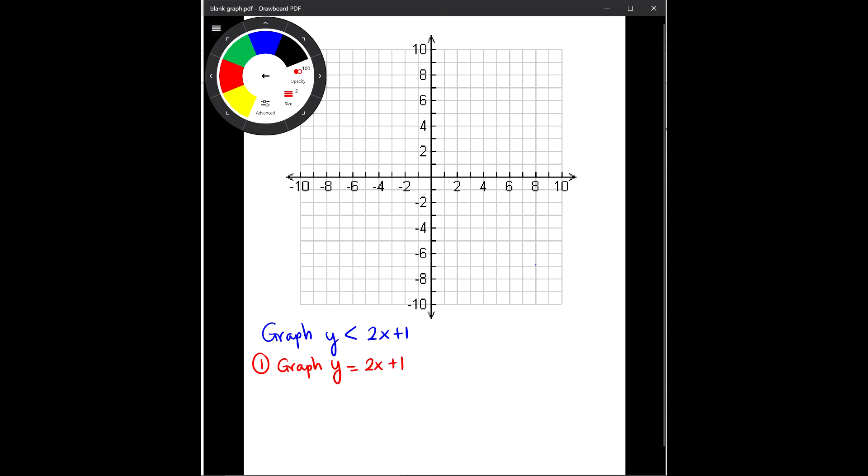So then if we graph y equals 2x plus 1, that means we have slope which is m is 2, and 2 stand-alone means 2 over 1. And y-intercept will be 1.